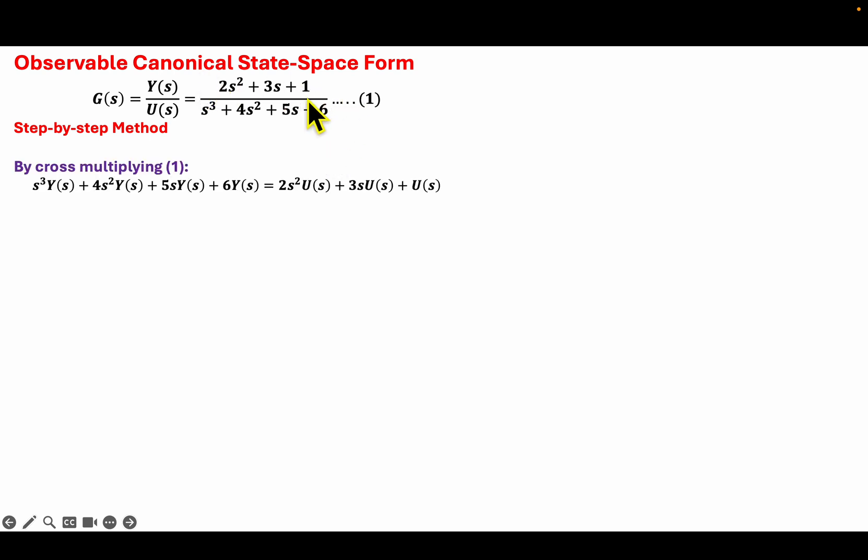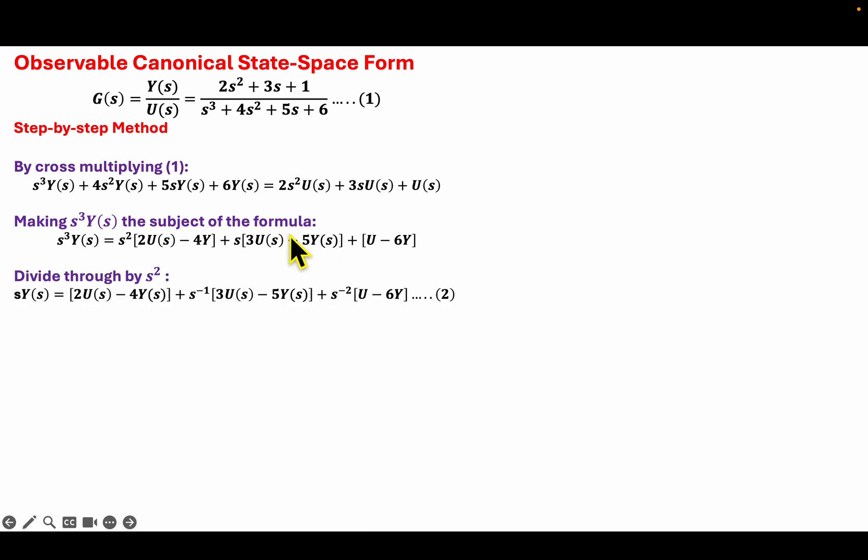So the first thing we are going to do is cross-multiply equation 1, and by doing that we'll have this equation. Then I will make S³Y the subject of the formula and group the other terms on the right-hand side as you can see. Then I will divide both sides by S², and I will have equation 2.